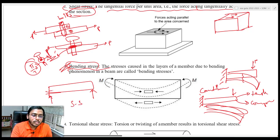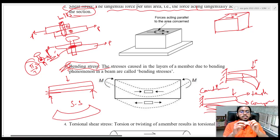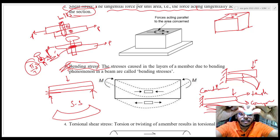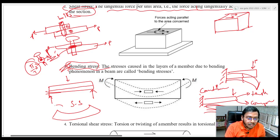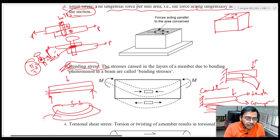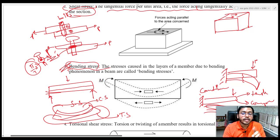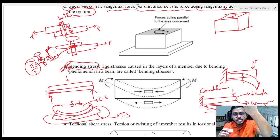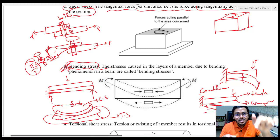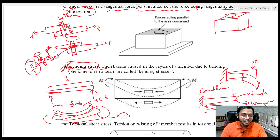Now I am talking about simply supported beam — both sides are supported. In a simply supported beam when the load is applied, the body deflects. Using your eraser and bending it, you can clearly see the top part is compressed — it got shrunk — and the bottom part got elongated. So in a simply supported beam, compressive stresses come at the top and tensile stresses come at the bottom. This is clear.